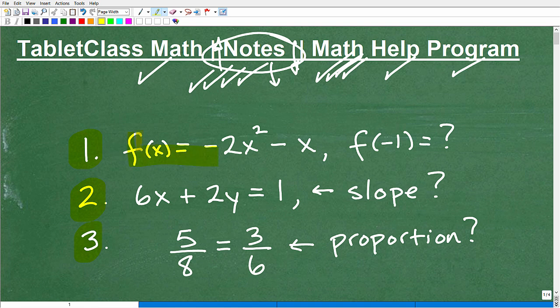So I have f(x) is equal to -2x² - x. I'd like you to evaluate this function for f(-1). That should hopefully mean something to you. Our second question, we have 6x + 2y = 1. That is a line or a linear equation. I'd like you to tell me the slope of it.